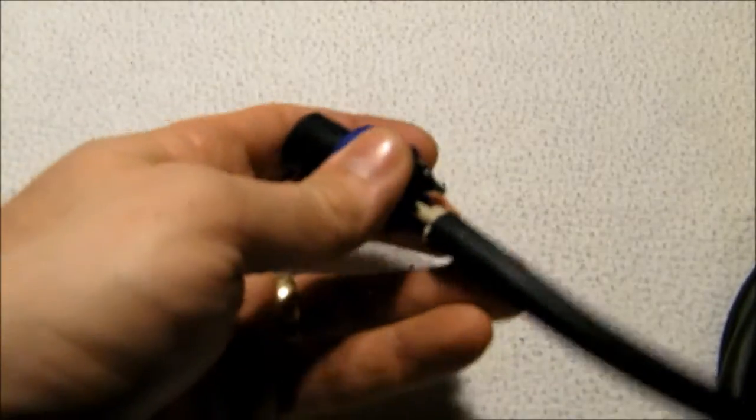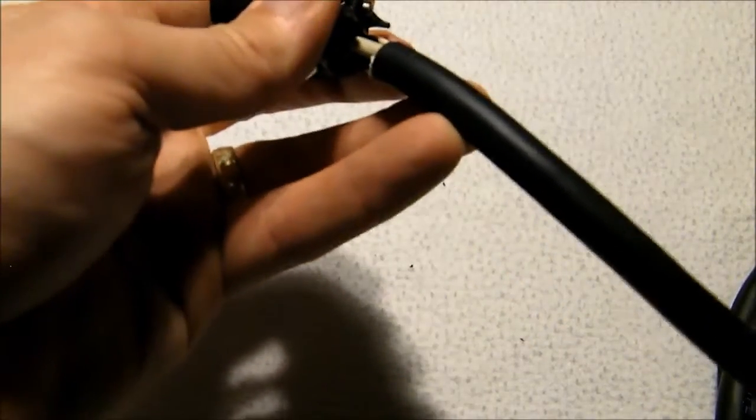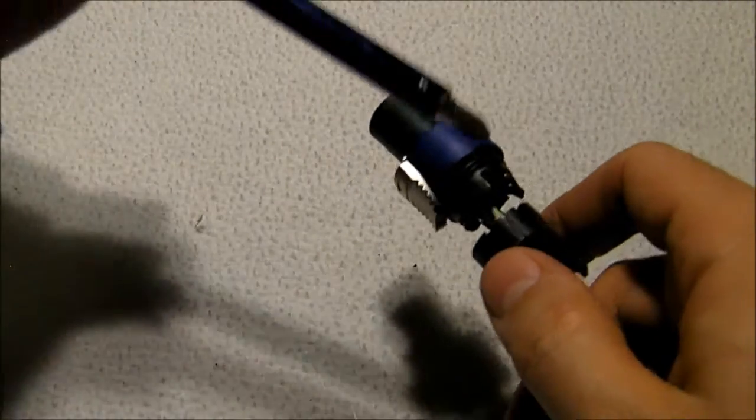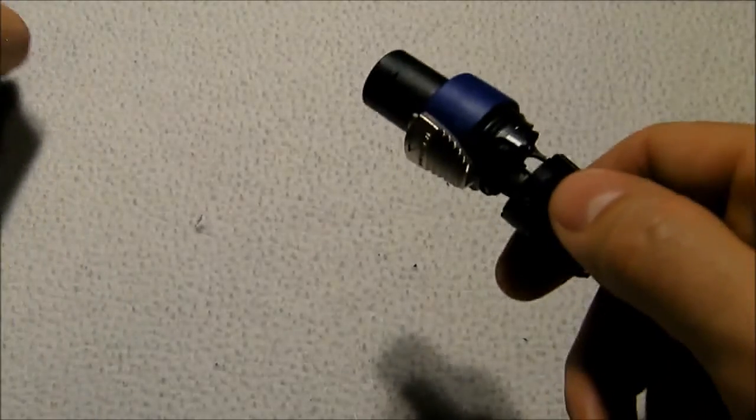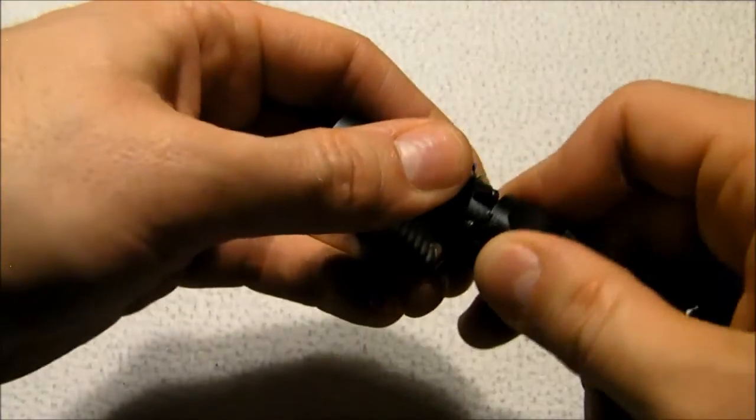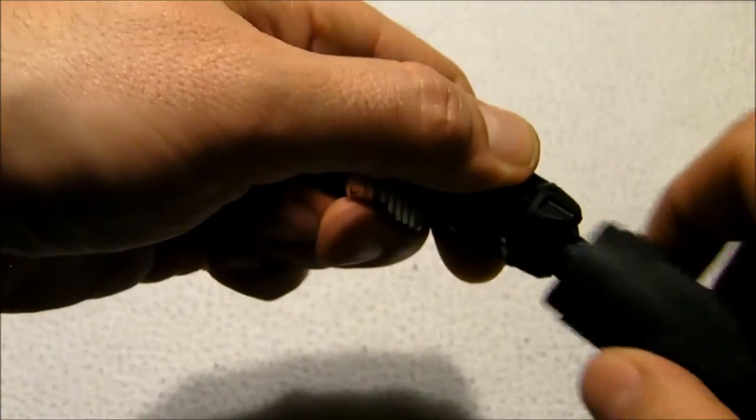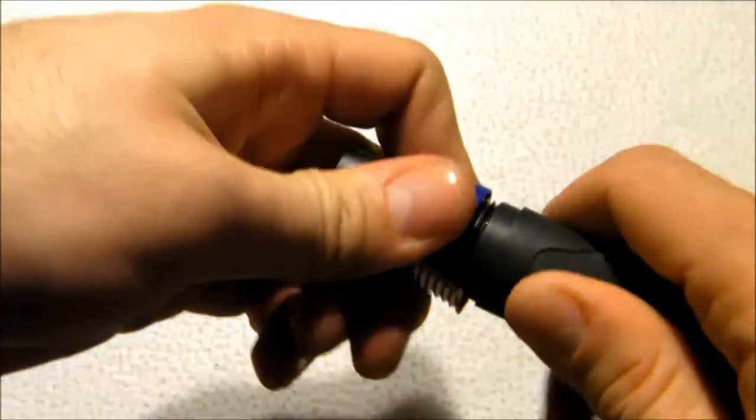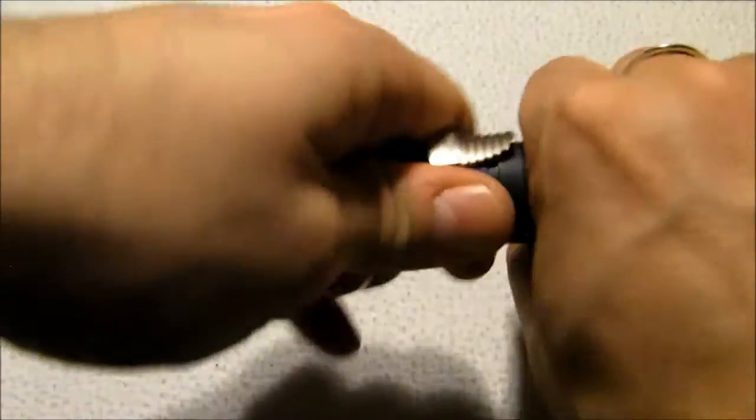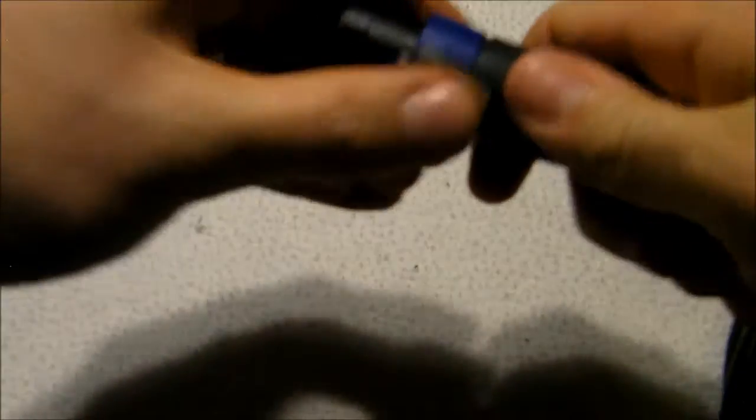Okay. Now we put the strain relief on, and for the first part, this has little notches. This has little notches right here and here, and it lines up inside the connector here. So you just want to try and line those up, and that will prevent it from spinning. And then you just simply get your outer shell on there. And there's your connector.